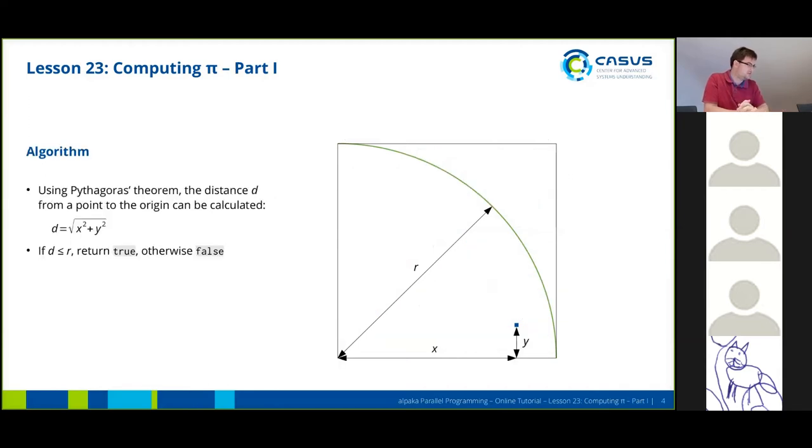We can just use Pythagoras theorem for this, so the distance d from a point to the origin can be calculated fairly easily. If the distance is smaller than or equal to the radius, our point is defined to be inside the circle, and otherwise it's false.